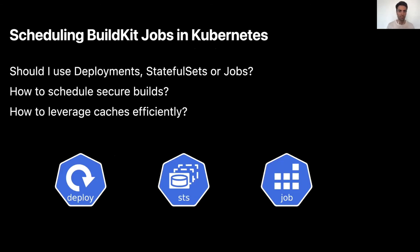Now that we know more about BuildKit, you probably wonder how to run BuildKit jobs in Kubernetes. Should I use a deployment, a stateful set, or maybe a job? Which one is more secure? How do I leverage caches? All of those questions are valid. To answer them, for each resource type we'll list the pros and cons and decide which one works best for us.